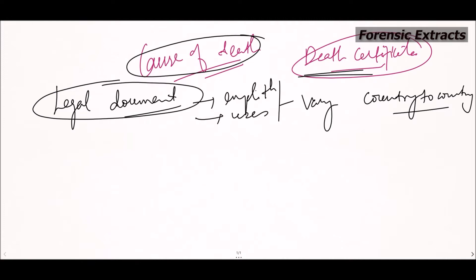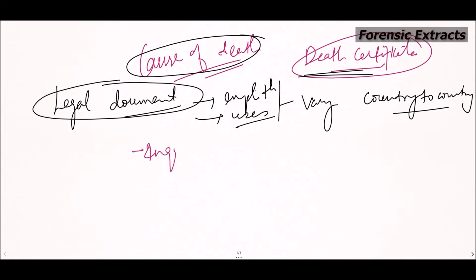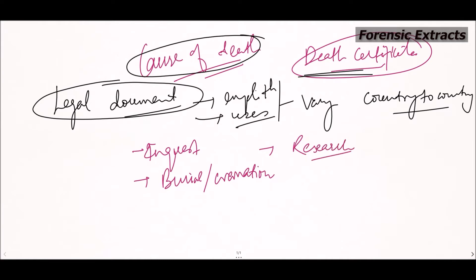The different implications and uses of the death certificate can be: for the purpose of inquest — like inquiry or investigation into the cause of death — where the death certificate is required in connection with post mortem and giving cause of death. It is also required for the purpose of burial as well as cremation, and for research purposes. These are the basic uses and implications of the death certificate.